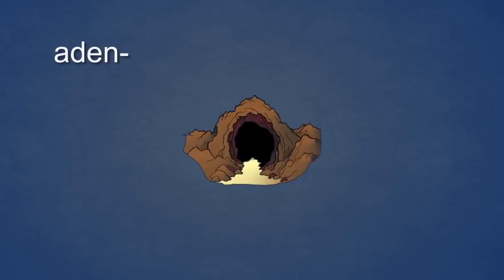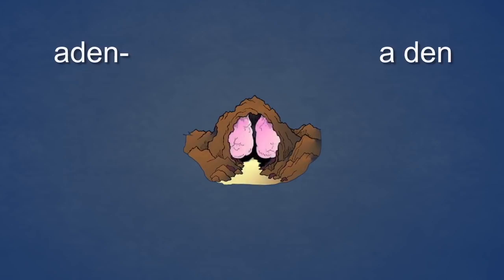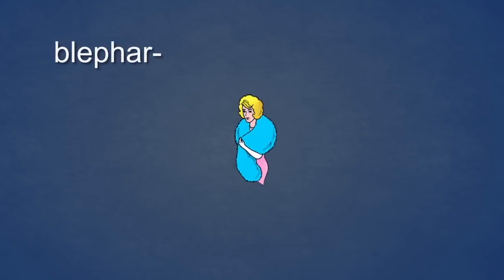Next, the element Aden. Aden sounds like a den. Here, you see a den. Aden means gland, so the image of Aden is changed to look like this — the den has glands hanging on the walls. They are cold and damp. Aden. A den. Gland.